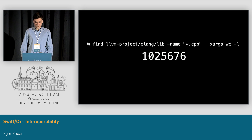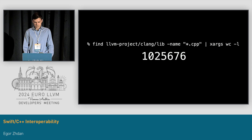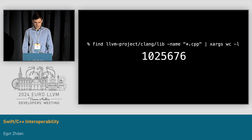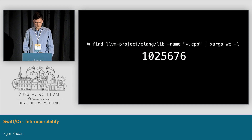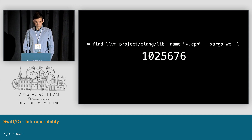The problem with switching to another language is that the amount of existing C++ code is huge. Let's consider the LLVM project, for example. It has over one million C++ lines of code in Clang alone, excluding tests. This code is not going away anytime soon, so the solution that we come up with needs to interoperate quite well with this large amount of existing C++ code.